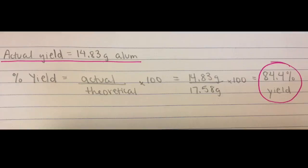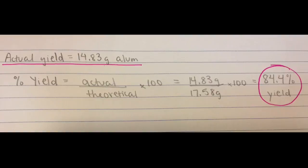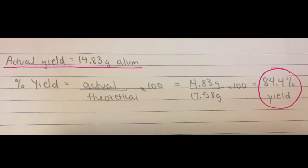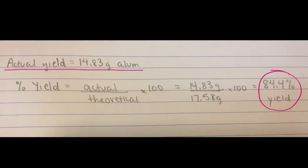There are several possible explanations for this low percent yield. For one, glassware measurements have small margins of error, but this would just lead to a small error. A more likely explanation would be the human error of losing some alum in the process of vacuum filtering it and then taking its mass.